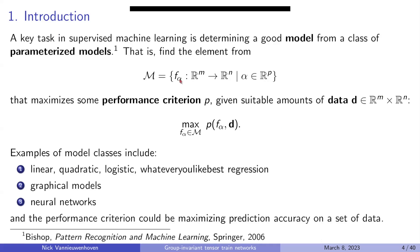The problem is to find a good function from a function class — a model family parameterized by parameters alpha — that can explain the given data. Many model classes exist: linear models, quadratic models, graphical models, and most well-known, neural networks. A specific performance criterion could be minimizing prediction error or maximizing accuracy on a given dataset.